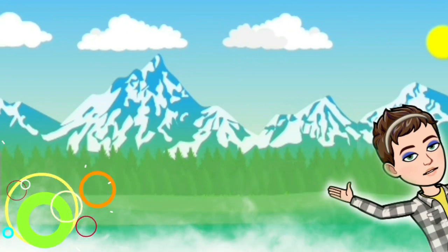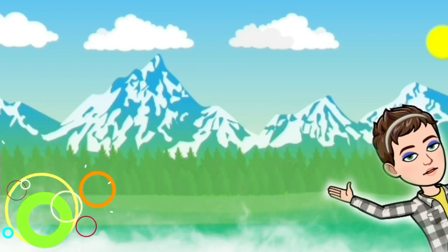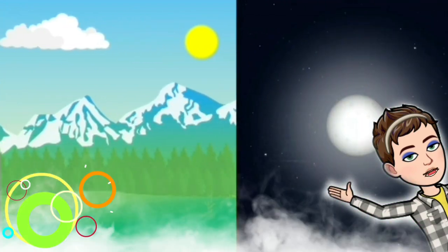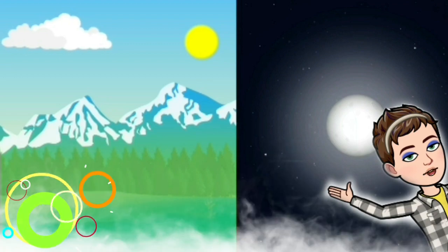We are able to see the blue sky, the white clouds, and the green grass because the light from the sun is getting reflected by them and traveling towards our eyes. At night, we are able to see the moon because it is reflecting the light from the sun.